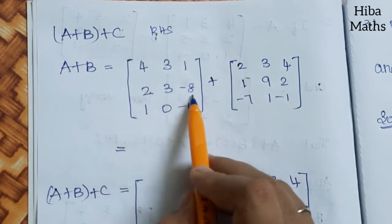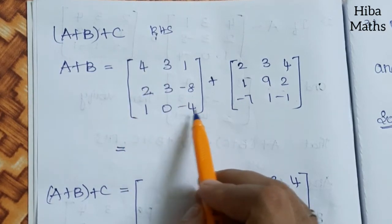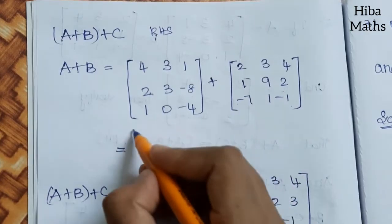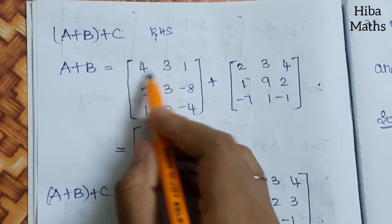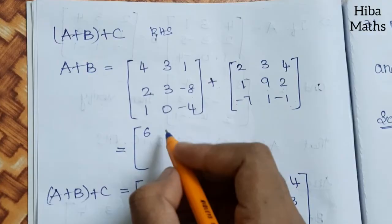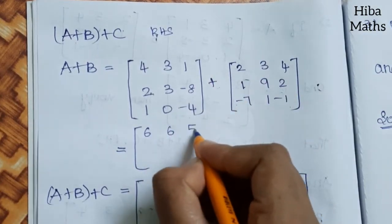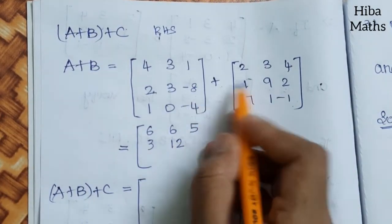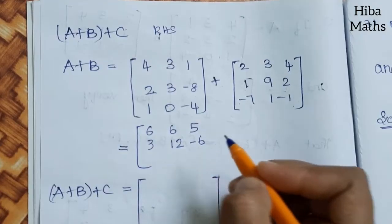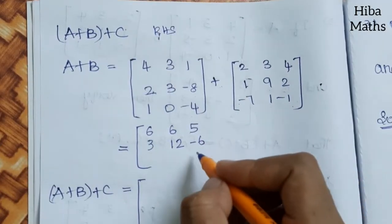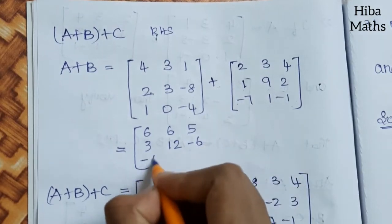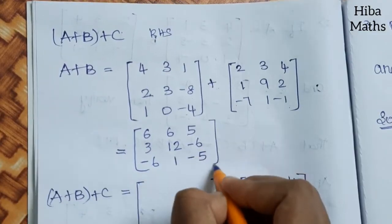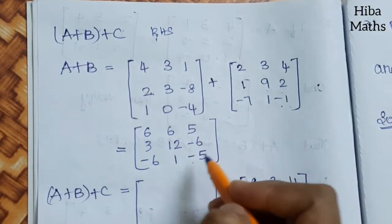Adding A and B element by element: 4+2=6, 3+3=6, 1+4=5, 2+1=3, 3+9=12, -8+2=-6 (larger number 8 has minus, so -6), 1+(-7)=-6, 0+1=1, -4+(-1)=-5. So A + B = [6,6,5; 3,12,-6; -6,1,-5].